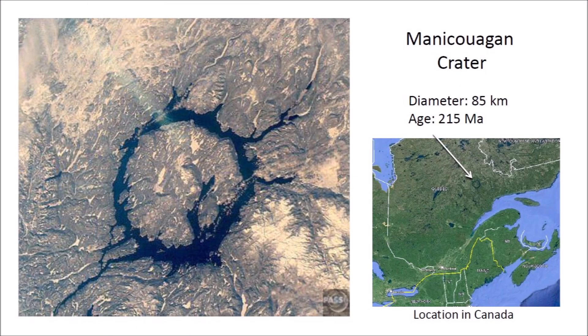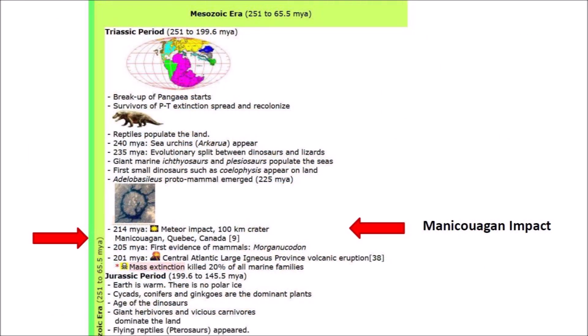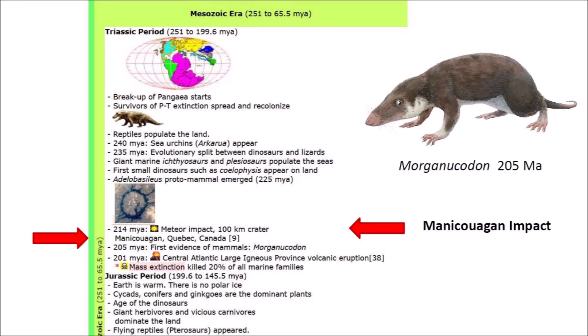The Manicouagan crater is located in Quebec, Canada. This image was taken from the Space Shuttle. The crater is a multiple ring structure about 85 kilometers across, with an annular lake that is its most prominent feature. Scientists believe that the crater was made by the impact of an asteroid with a diameter of 5 kilometers about 215 million years ago. The Manicouagan impact happened during the Triassic period of the Mesozoic era and would have killed many of the reptiles and dinosaurs that populated the Earth at that time. Every cataclysm changes the course of evolution.